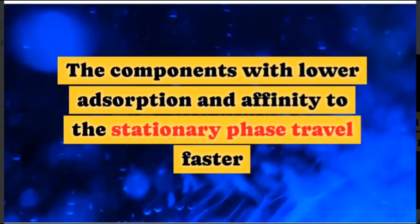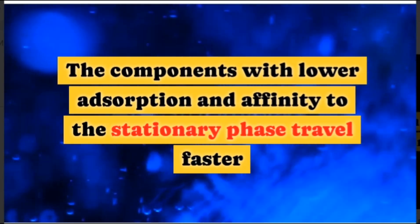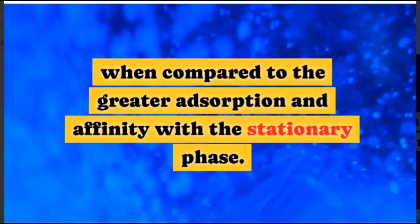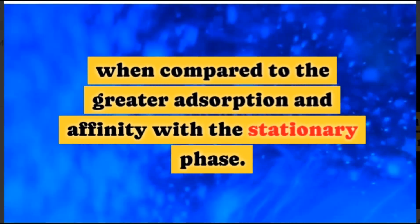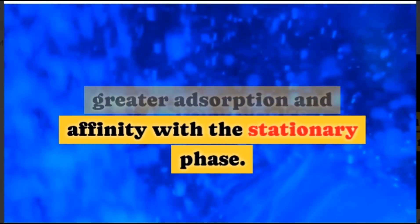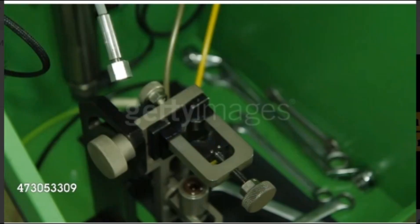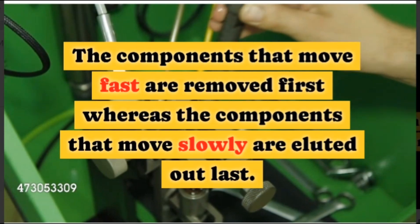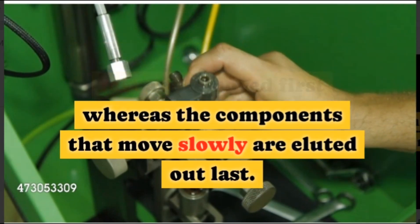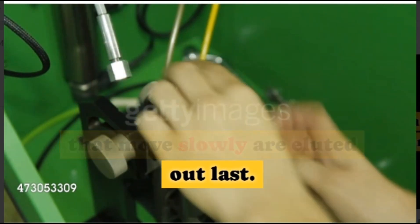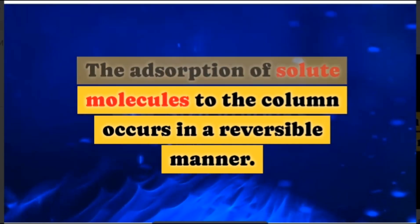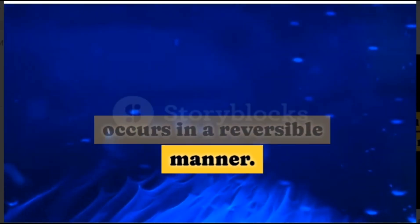The components with lower adsorption and affinity to the stationary phase travel faster when compared to those with greater adsorption and affinity to the stationary phase. The components that move fast are removed first, whereas the components that move slowly are eluted out last. The adsorption of solute molecules to the column occurs in a reversible manner.